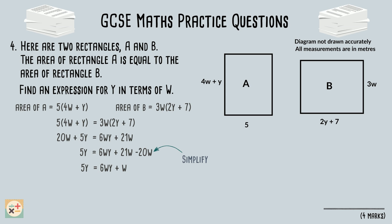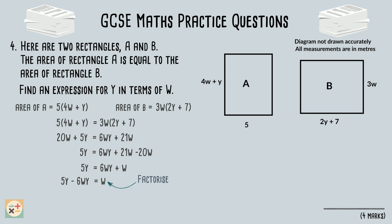Notice we have the term 6WY in the equation. We need to move this to the side of the equation where Y is, and then factorise to split the W and the Y apart. We can take out Y as a common factor here. Rearrange again so that Y is on its own on the left hand side and the W terms are on the right hand side. We have now formed an expression for Y in terms of W, and have therefore found the answer to the question.